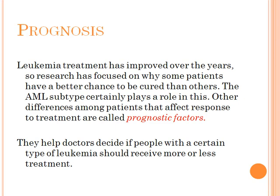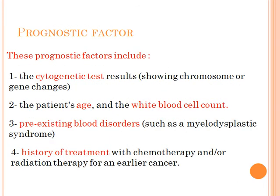Regarding prognosis, leukemia treatment has improved over the years, and research has focused on why some patients have a better chance of being cured. The AML subtype certainly plays a role. Prognostic factors include cytogenetic test results showing chromosome or gene changes, the patient's age, white blood cell count, pre-existing blood disorders, and the history of treatment with chemotherapy or radiation therapy for an earlier cancer.